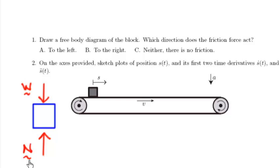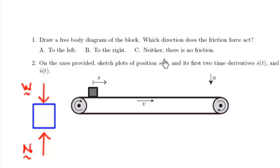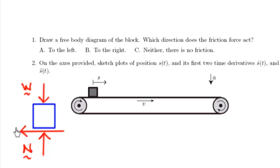Then I have one more force: friction. The friction force is tangent to the belt — it's either pushing or pulling on the bottom surface of the block. A question: which direction does that friction force act? Does it pull the block to the left, or push the block to the right? Students usually say the friction force pulls on this block to the left.